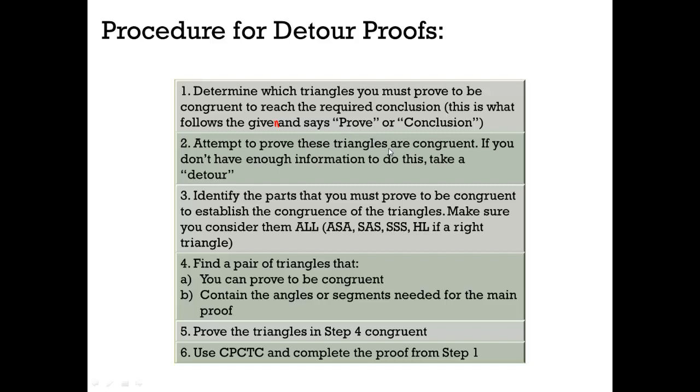Attempt to prove these triangles are congruent. If you don't have enough information to do this, we take a detour. We looked at it and we said, we don't have quite enough information to do it. So we had to do our detour proof. Then we have to identify the parts that you must prove to be congruent to establish the congruence of the triangles. We have to make sure that we consider them all: angle-side-angle, side-angle-side, side-side-side, hypotenuse leg if it's the right triangle.